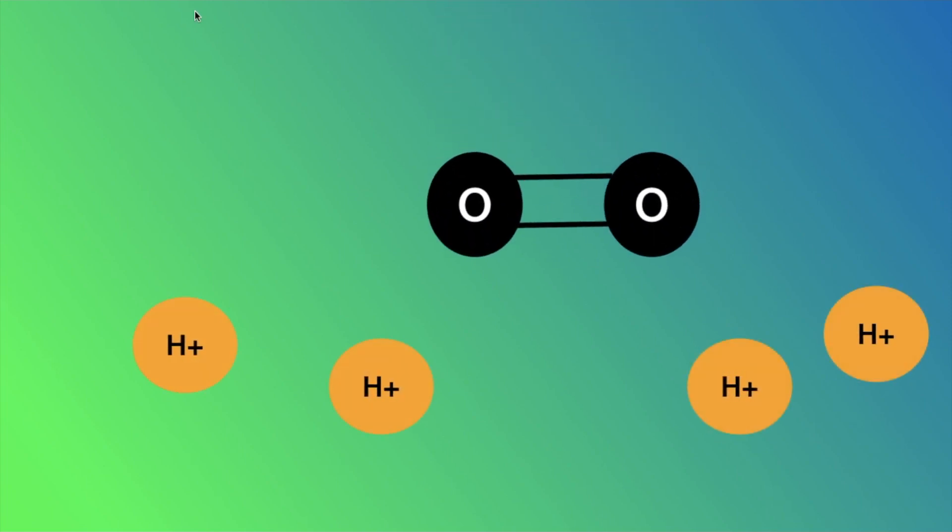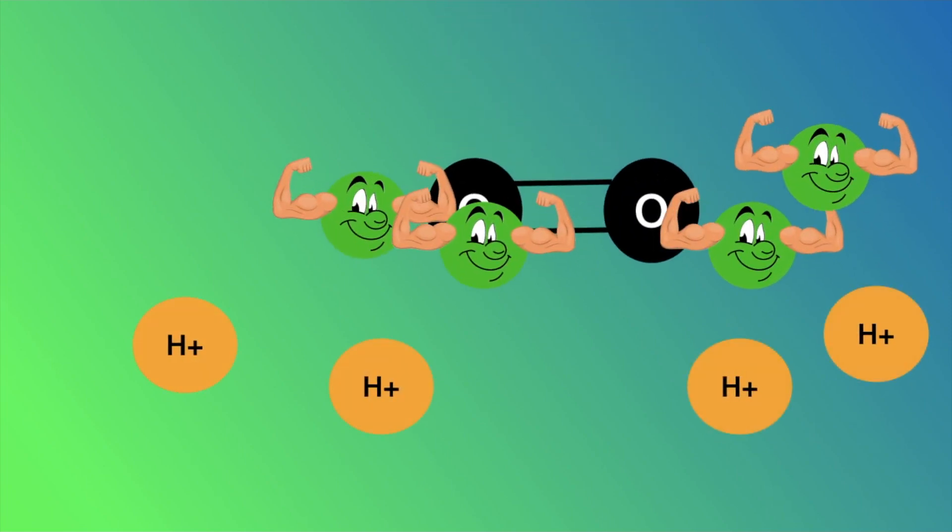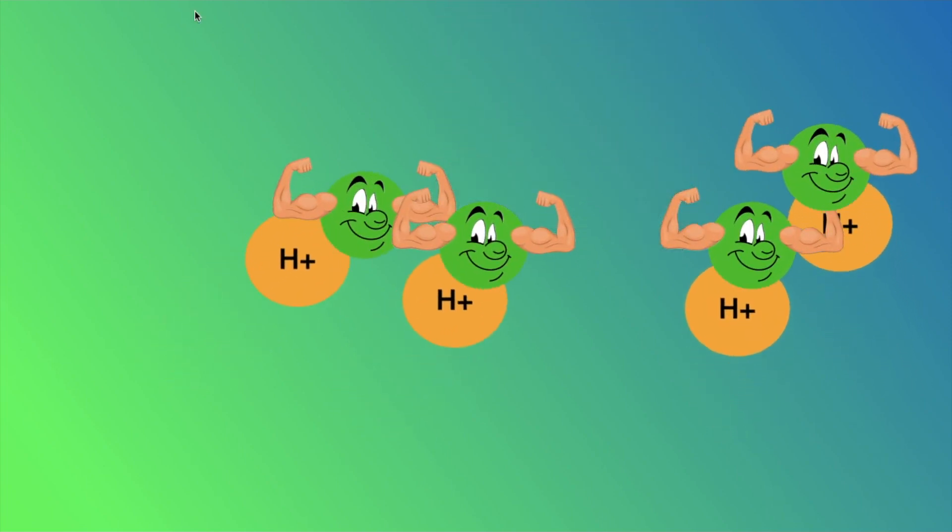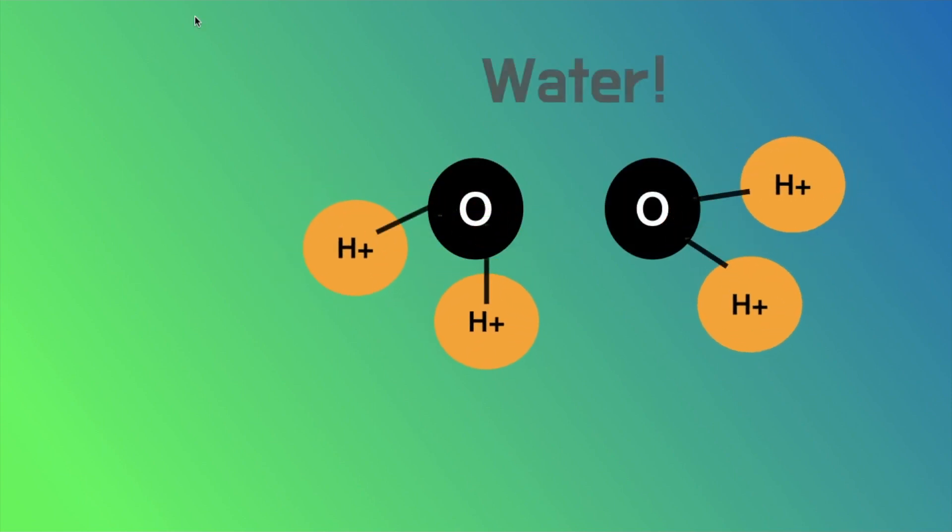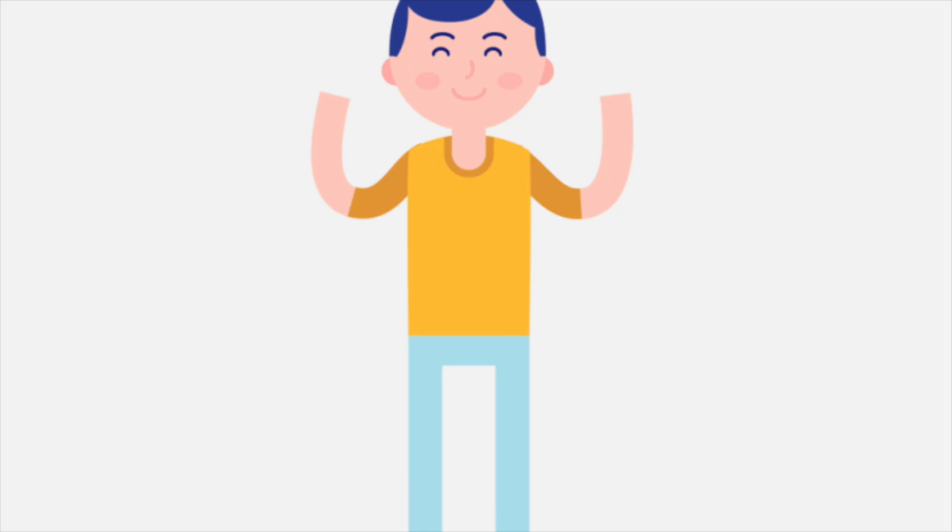At the end, oxygen comes into play. Electrons finally use their manipulation skills to attract hydrogen particles to the oxygen molecules to create H2O, or water. That's it.